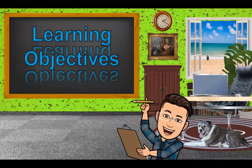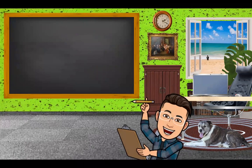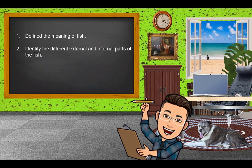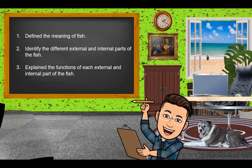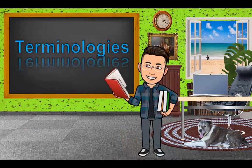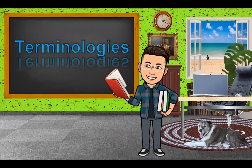For the learning objectives of our topic for today, at the end of the discussion, you can define the meaning of fish, identify the different external and internal parts of the fish, and explain the functions of each external and internal part of the fish. During the discussion also, you will meet different words or terminologies in our topic.